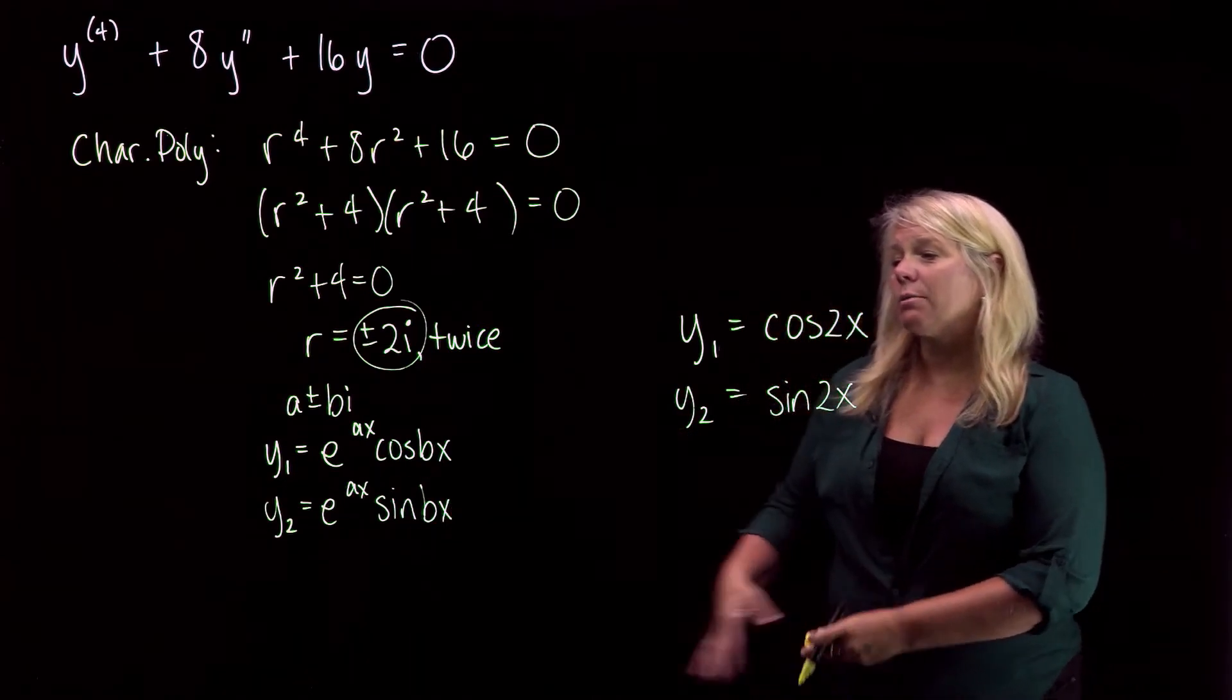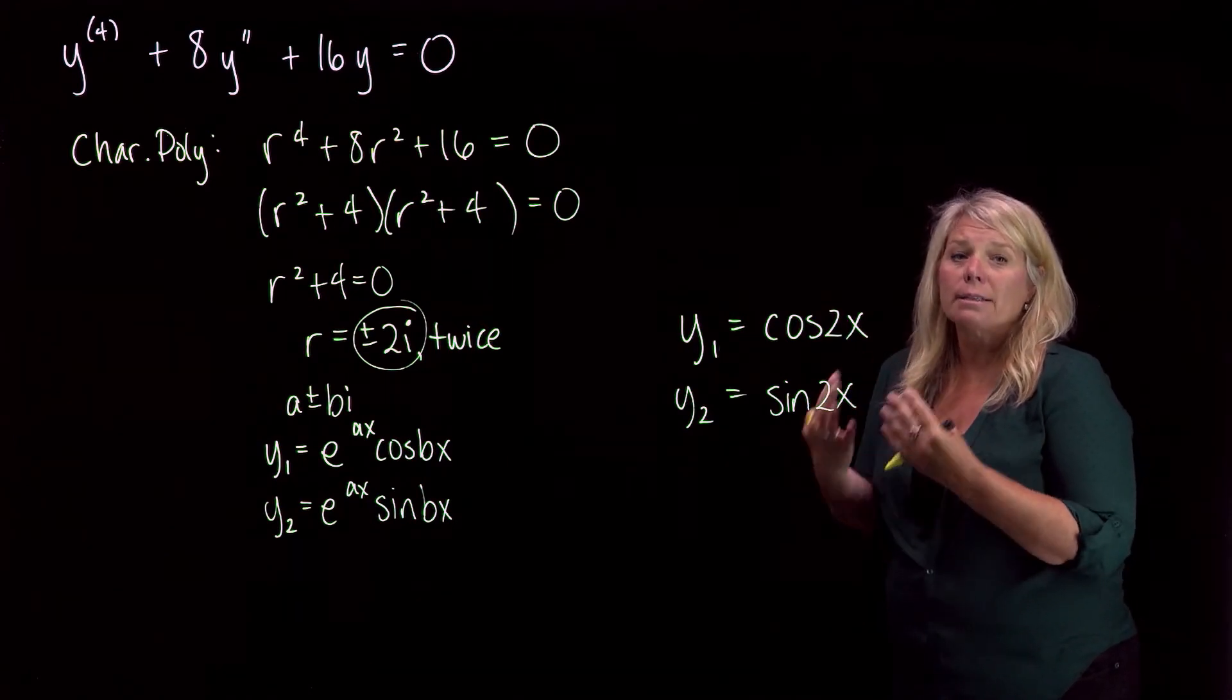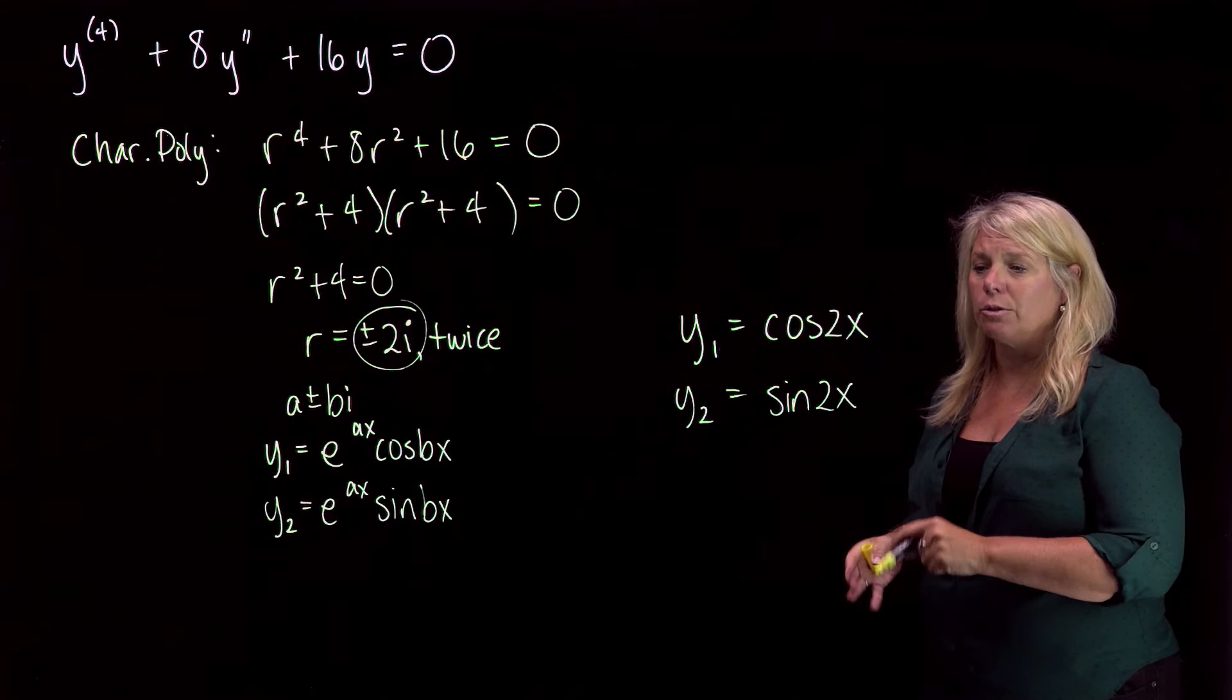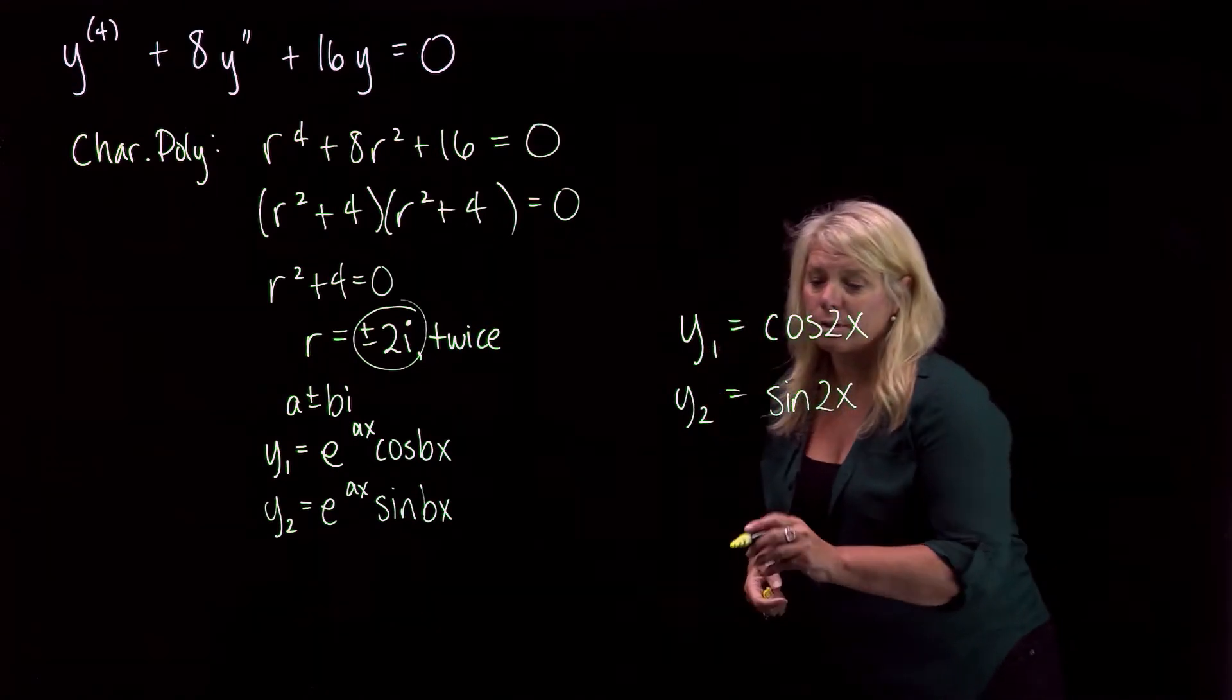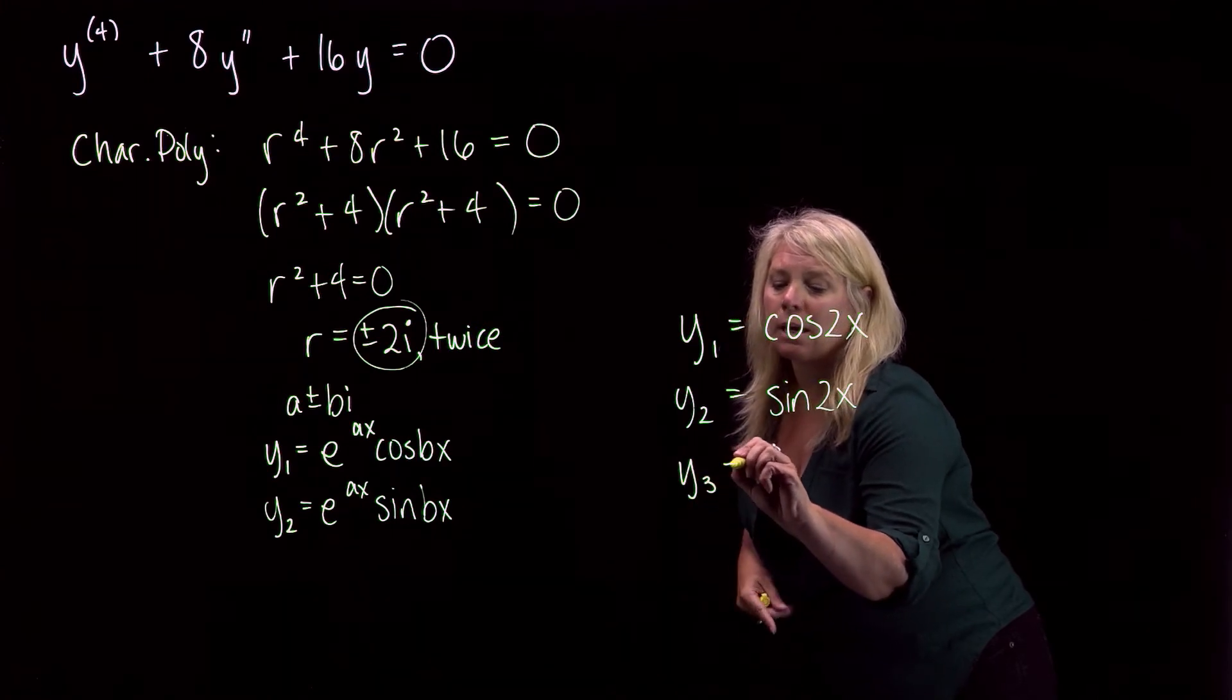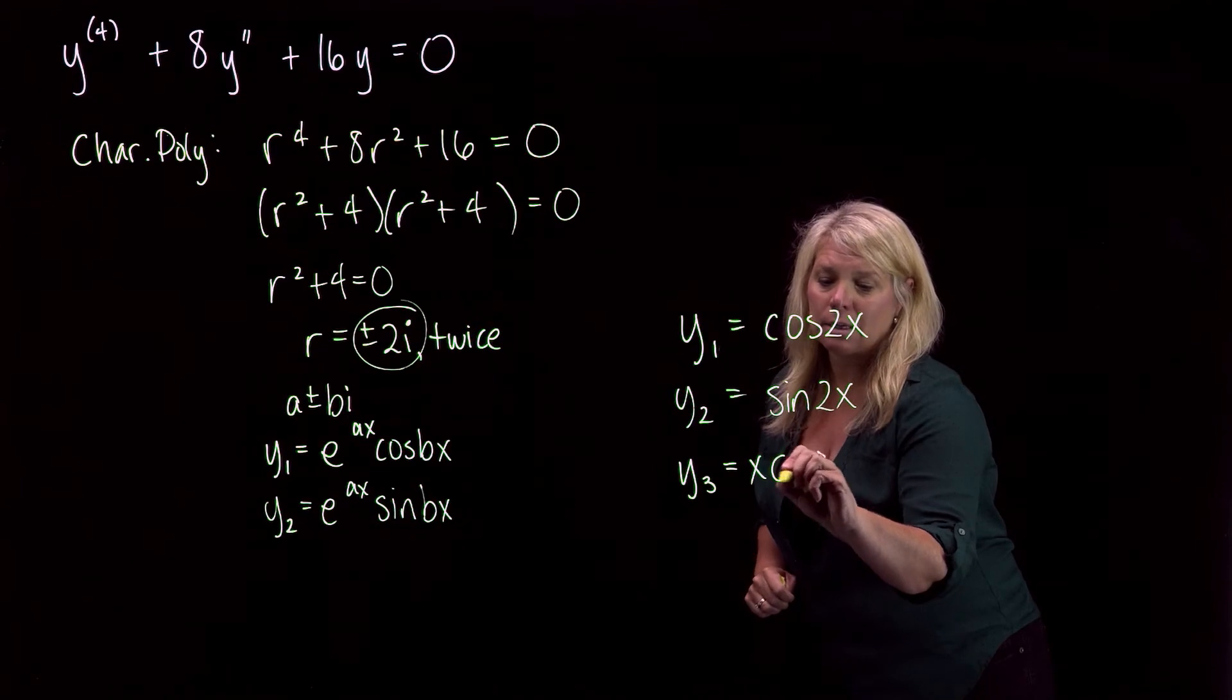Alright, but then because we have the multiplicity, multiplicity two on each of those, we can get our next set of linearly independent solutions by just multiplying each of these by x to the first. And again, if I had higher multiplicity, I could continue multiplying by x, a power of x, to get more.